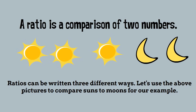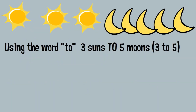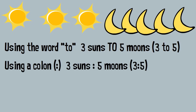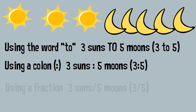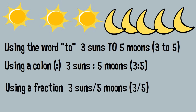Let's use the above pictures to compare suns to moons for our example. Ratios can be written using the word 'to': 3 suns to 5 moons; using a colon: 3 suns colon 5 moons; or using a fraction.